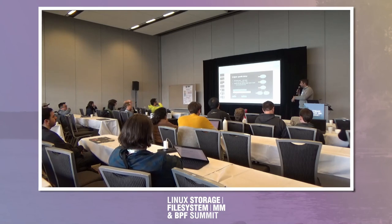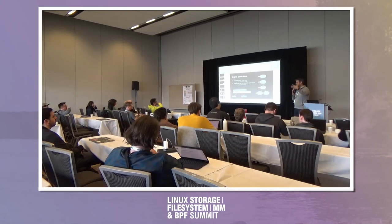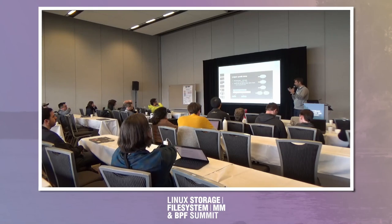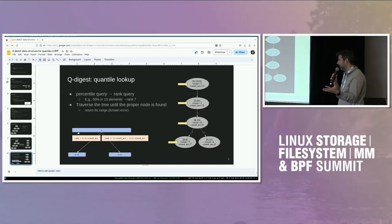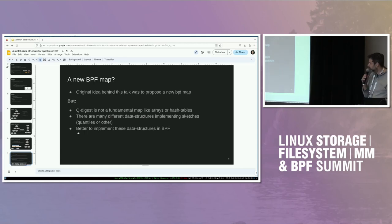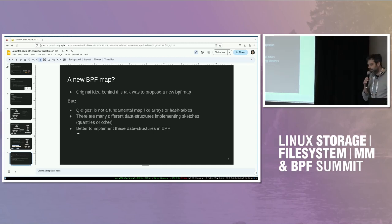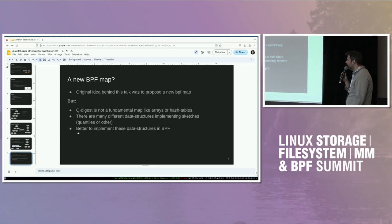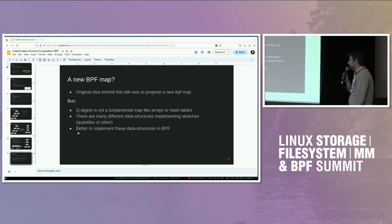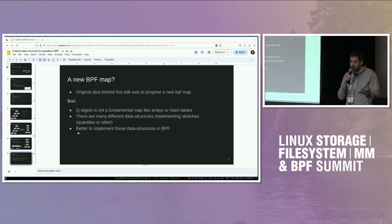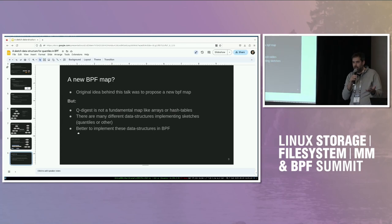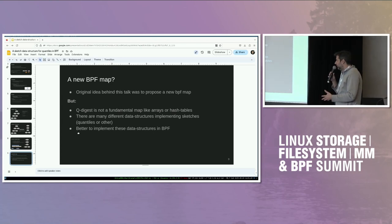There are two operations: lookup and insert, together with compression that you do periodically when running out of memory. Initially the original idea was to propose a new BPF map, but after reflecting on it I realized this doesn't really make sense. This data structure is not as fundamental as arrays and hashmaps, and there are probably tens of different implementations you'd want for quantiles. So it's better to implement these data structures in BPF.